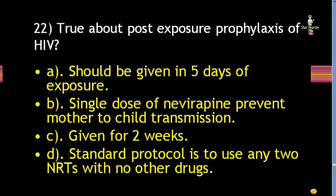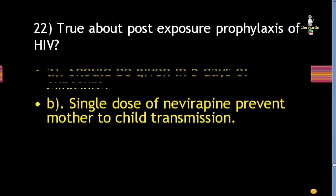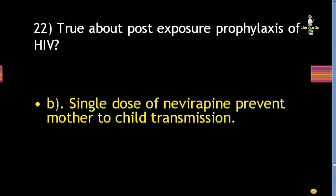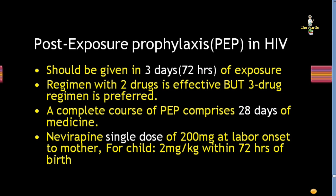Next question: true about post-exposure prophylaxis of HIV is: should be given within 5 days of exposure; single dose of nevirapine prevents mother-to-child transmission; given for 2 weeks; or standard protocol uses any 2 NRTIs with no other drugs. Correct answer is single dose of nevirapine prevents mother-to-child transmission. PEP in HIV should be given within 3 days or 72 hours of exposure. Two-drug regimen is effective but 3-drug regimen is preferred. A complete course of PEP comprises 28 days of medicines. Nevirapine: single dose of 200 mg at labor onset to mother; for child, 2 mg/kg within 72 hours of birth.